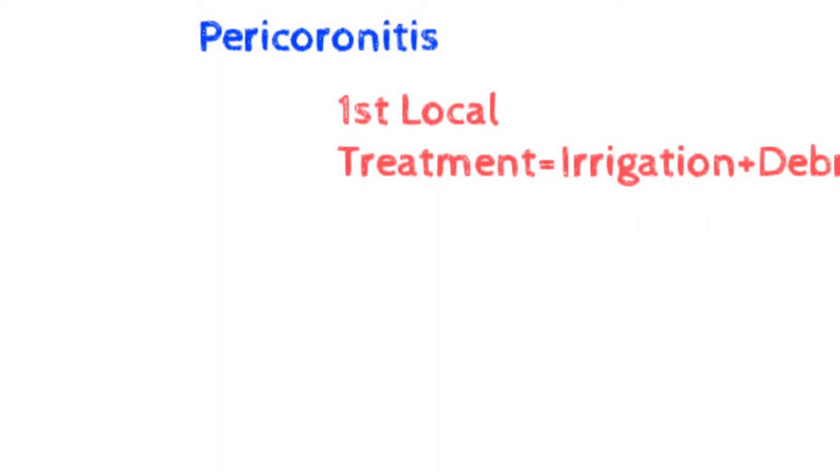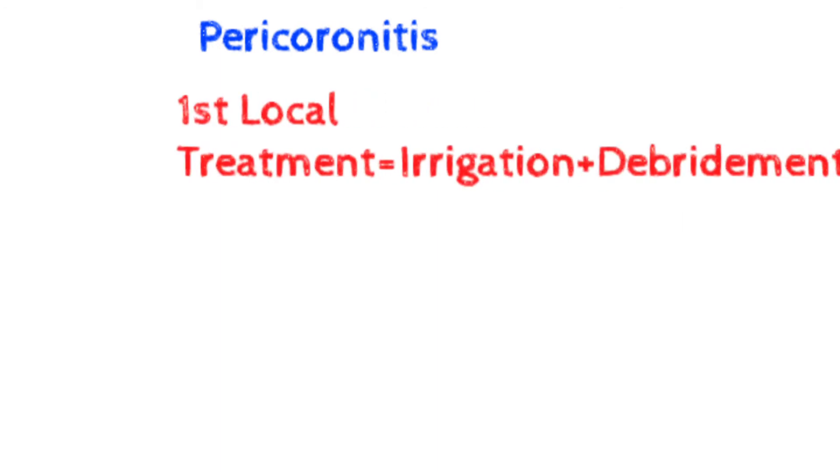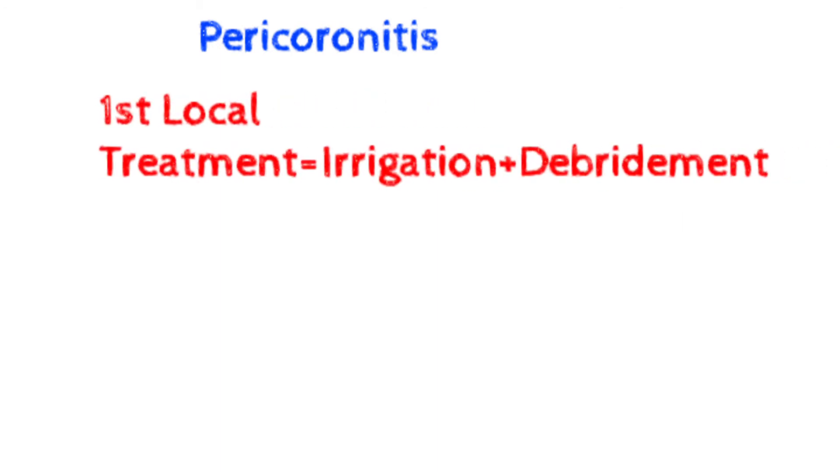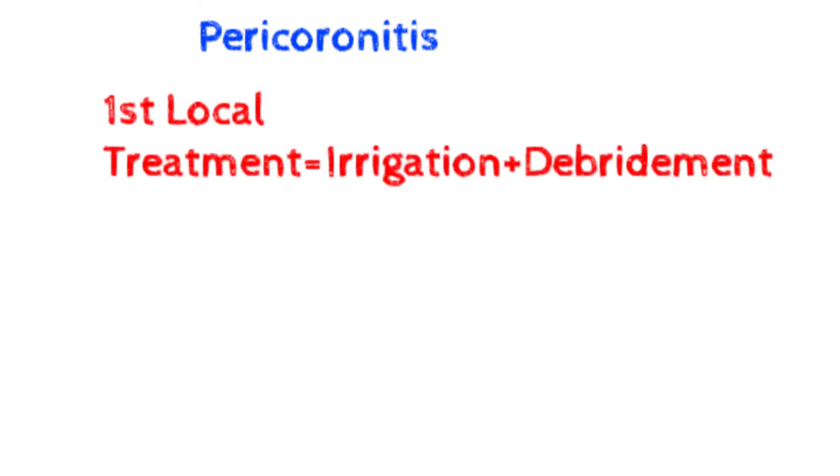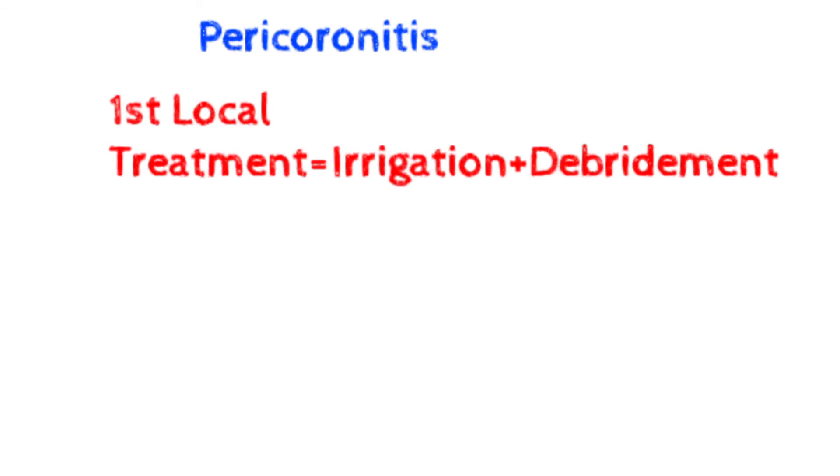Now for pericuronitis: first we go for local treatment. In local treatment for pericuronitis, first we irrigate that area, and then we do debridement. So in local treatment, the first step is irrigation and the next is debridement.